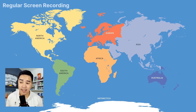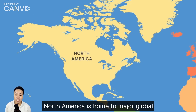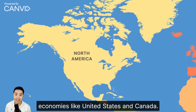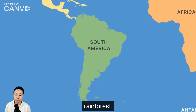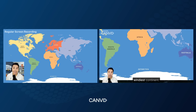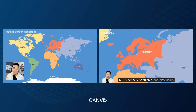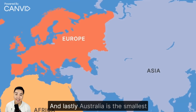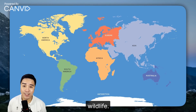Africa is the second largest continent, which is also the cradle of humanity. North America is home to major global economies like the United States and Canada. South America is home to the Amazon rainforest. Antarctica is the coldest, driest, and windiest continent. Europe is one of the smallest continents but is densely populated and historically significant. And lastly, Australia is the smallest continent and is renowned for its unique wildlife.